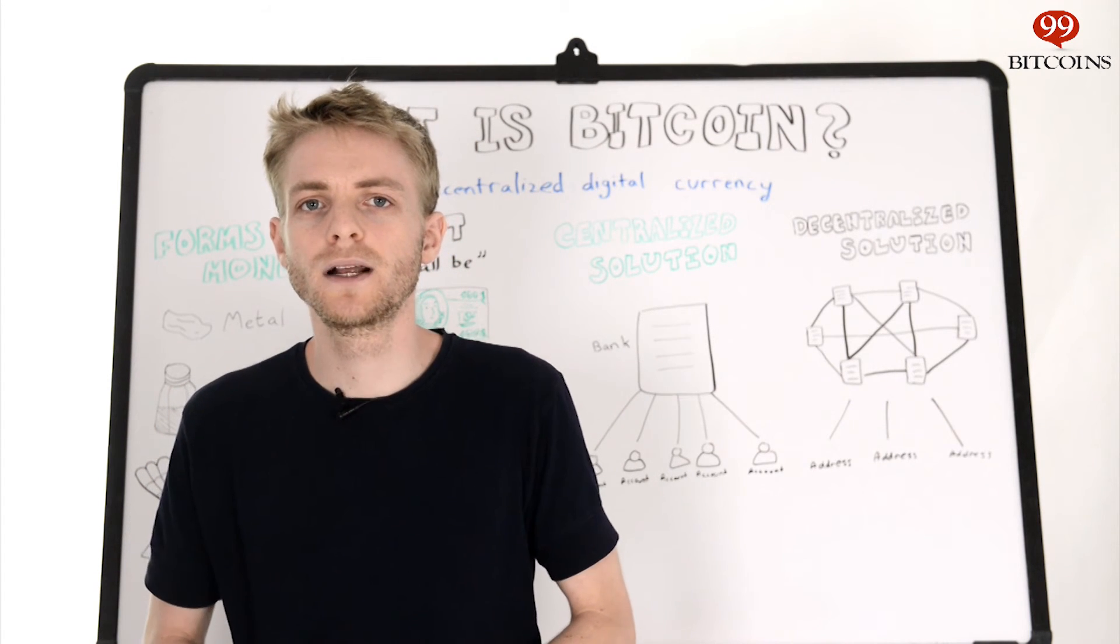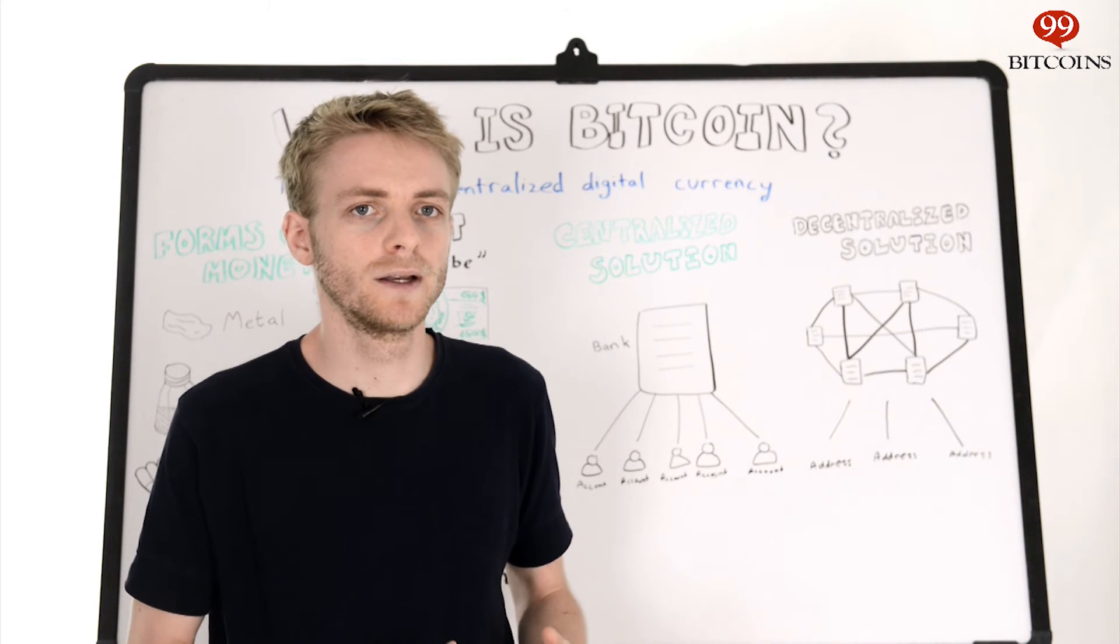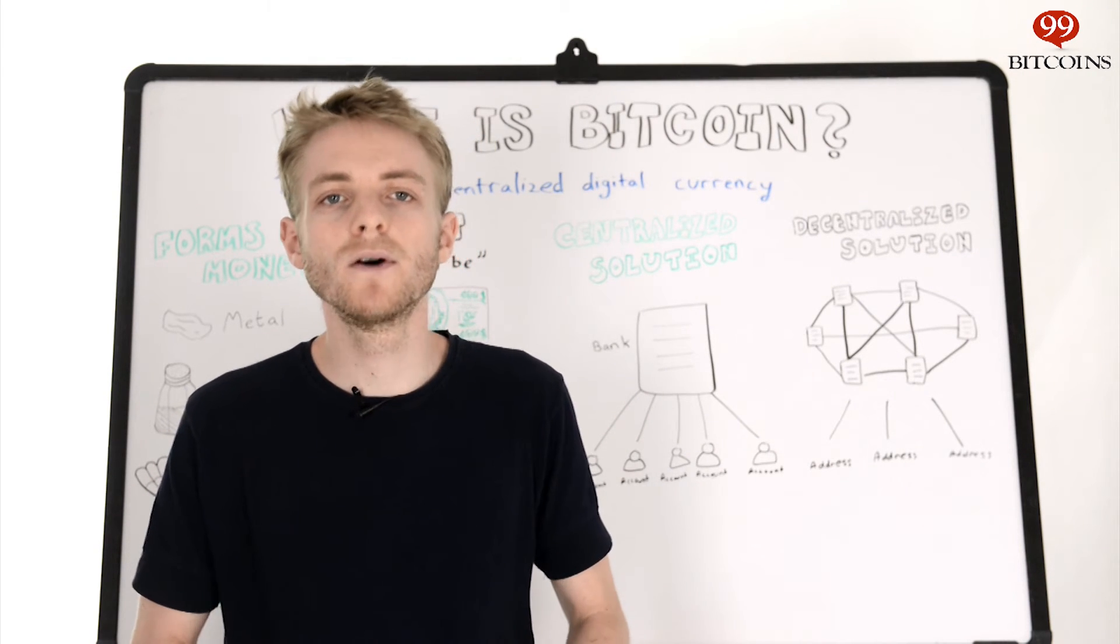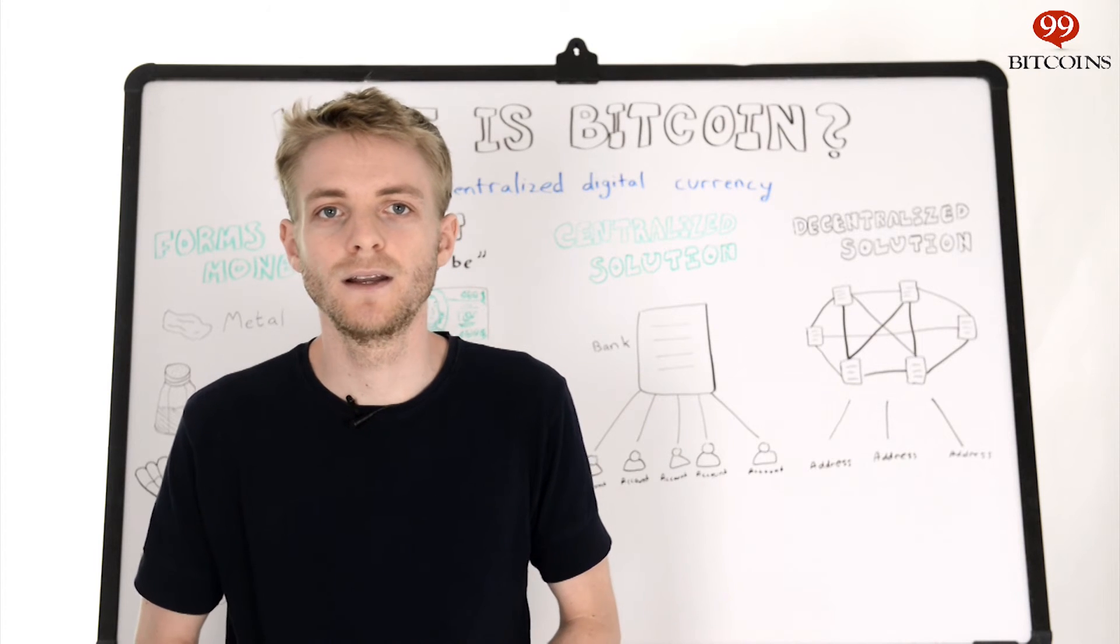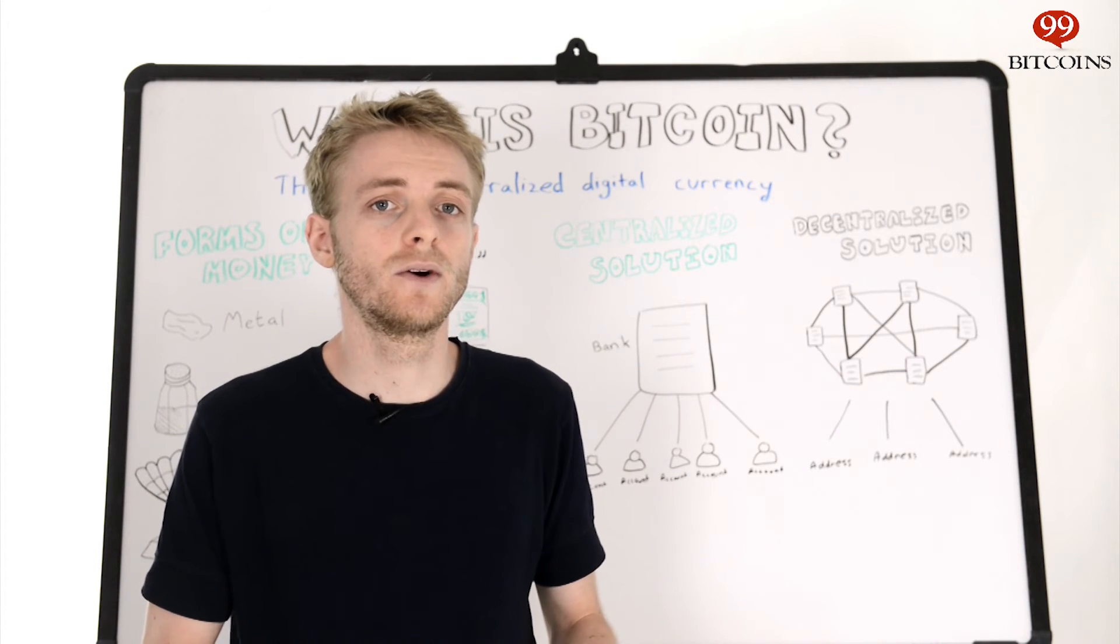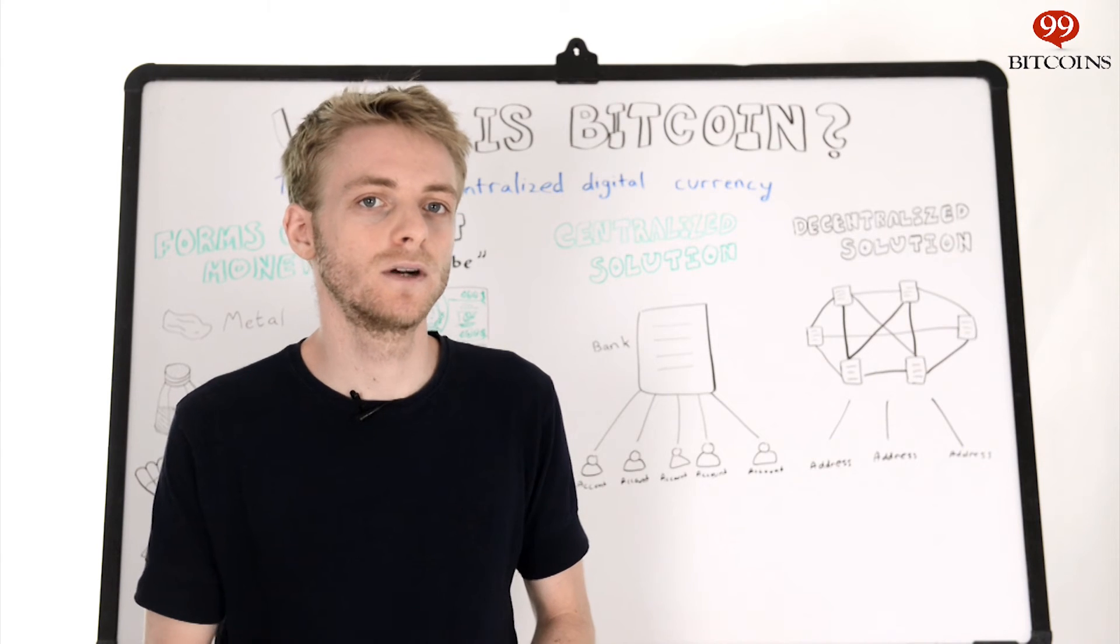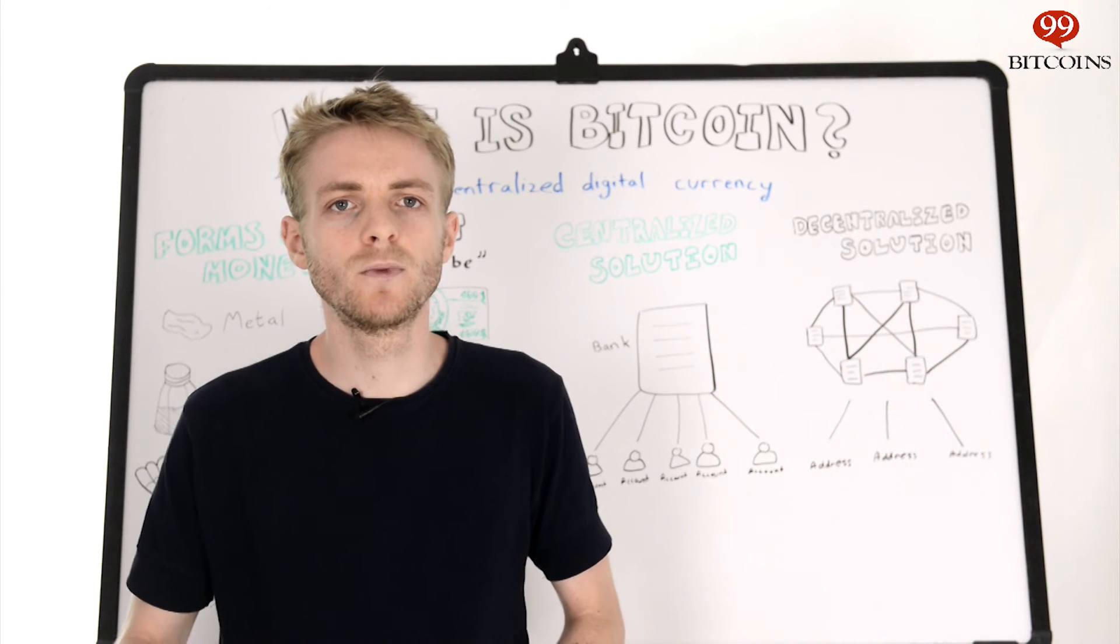Now usually people get concerned when they hear about this ledger being public. Isn't this a privacy problem? Well, like most privacy issues, it's complicated. Whatever you may have heard about Bitcoin, it's not really inherently anonymous or identifiable. We'll touch more on this in a later video.